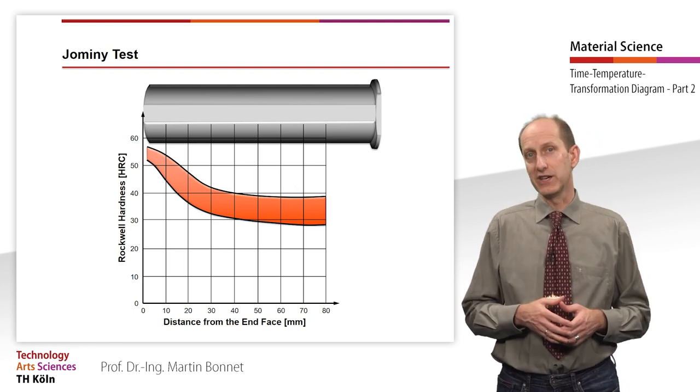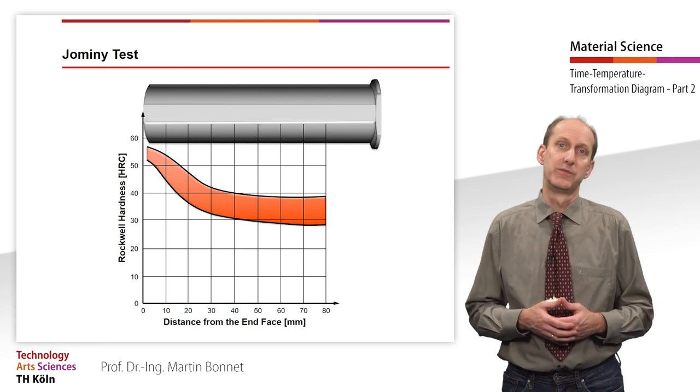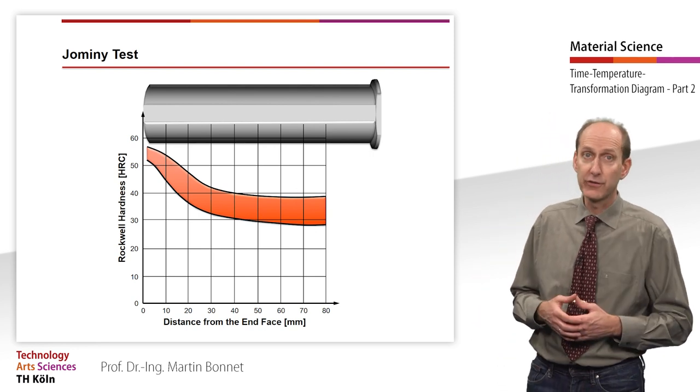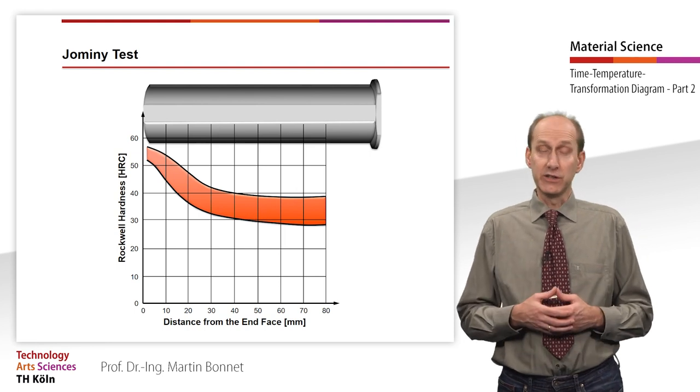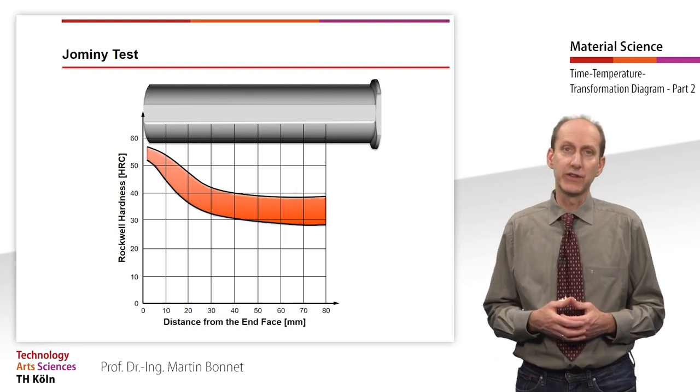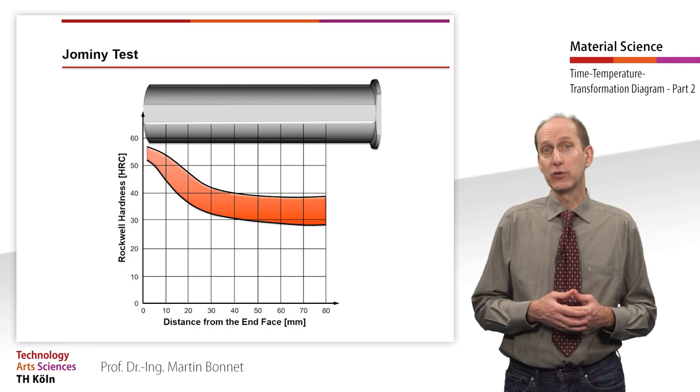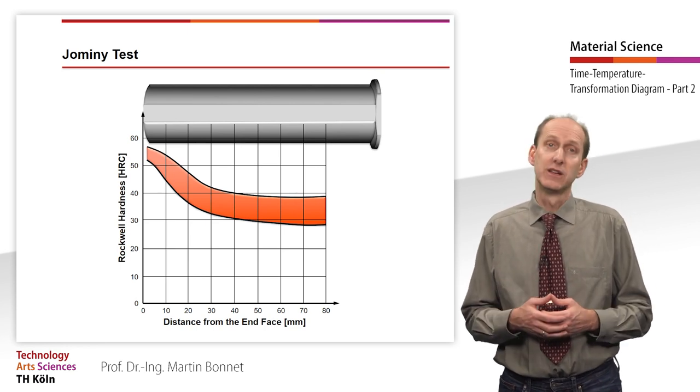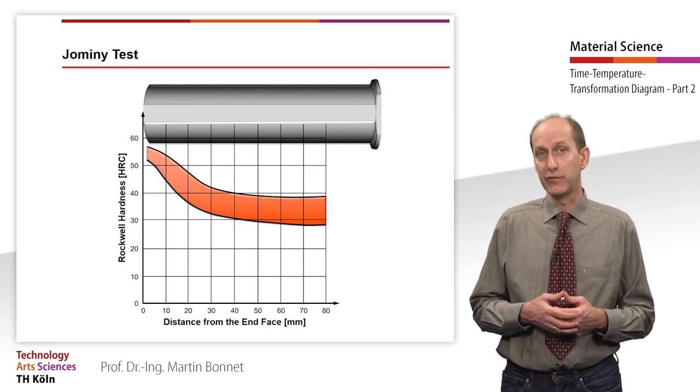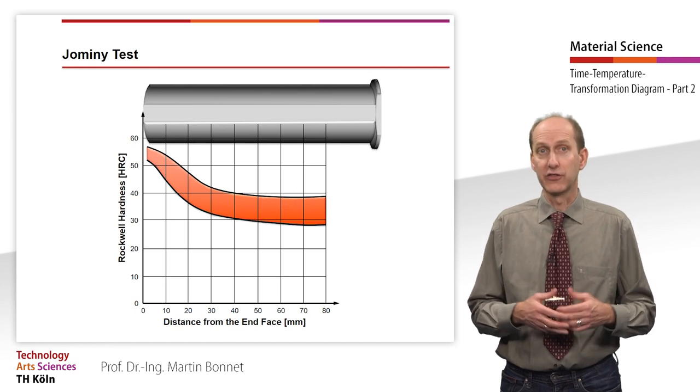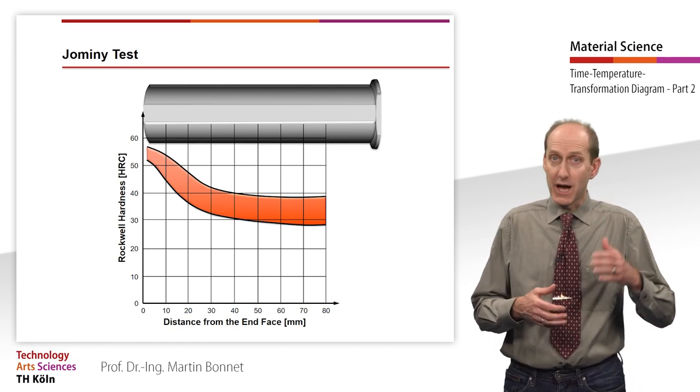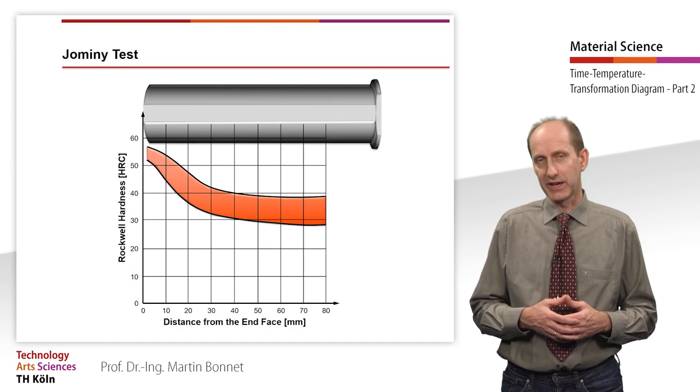The hardness results of the Jominy test are entered into a diagram. As an example, the hardenability band for the quenched and tempered steel is shown here. The solid lines form the upper and lower limits of the scattered band.